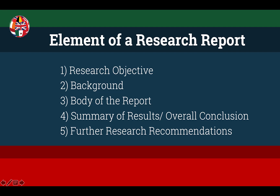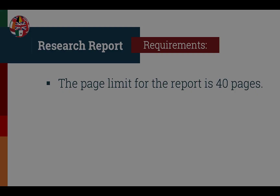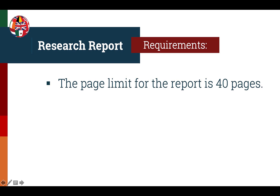Here's a list of the required research report elements: the research objective, the background, the body of the report, the summary of results (essentially an overall conclusion), and further research recommendations. Regarding general requirements for the research report, the page limit is 40 pages. Keep in mind that a longer report is not necessarily a better report — learning to be concise is very important. The average length of submitted Level 1 reports is 25 to 40 pages.